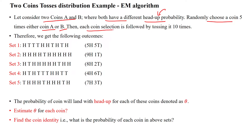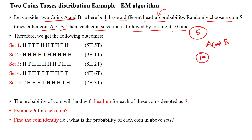Each coin selection is followed by tossing it 10 times. So when you are selecting the coin five times, you may select either coin A or coin B. If you select coin A, it should be tossed 10 times. From this, what is the probability of selecting coin A and what is the probability of selecting coin B?